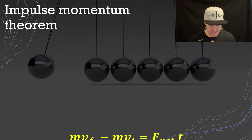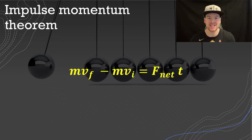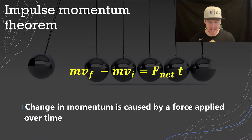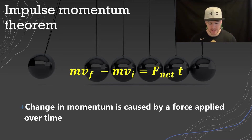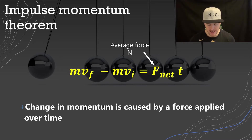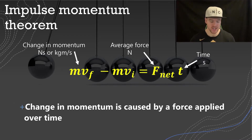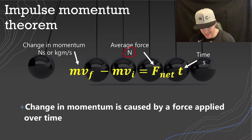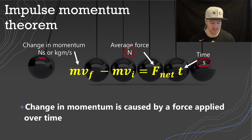Formally, the impulse-momentum theorem is: MVf minus MVi equals F net multiplied by t. It's saying that a change in momentum — which we call an impulse — is caused by a force applied over an amount of time. Average force is in Newtons, times time in seconds. This makes sense with our units: momentum is kilogram meters per second or Newton seconds, and from this formula, Newtons times seconds gives Newton seconds.